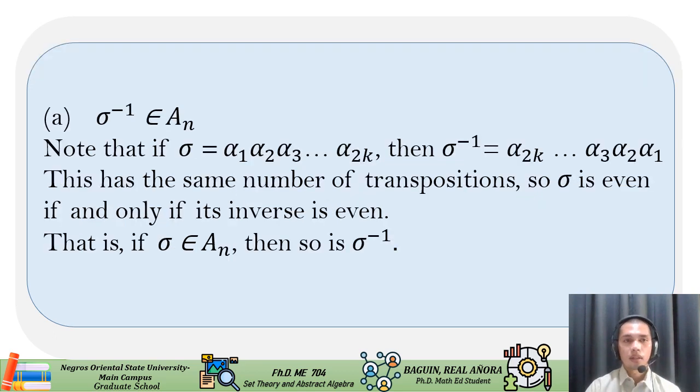We have part A: sigma inverse is in A sub n. Note that if sigma is equal to alpha sub 1, alpha sub 2, alpha sub 3, until alpha sub 2k, then sigma inverse is equal to alpha sub 2k, until alpha sub 3, alpha sub 2, alpha sub 1. This is the same number of transpositions. So, sigma is even if and only if its inverse is even.